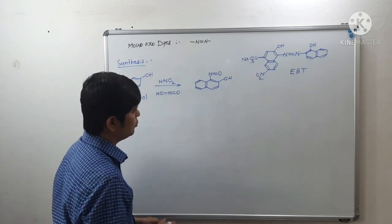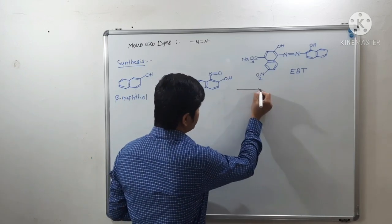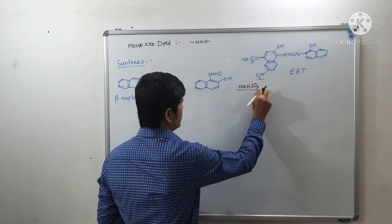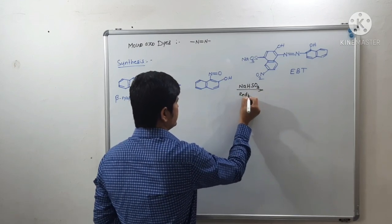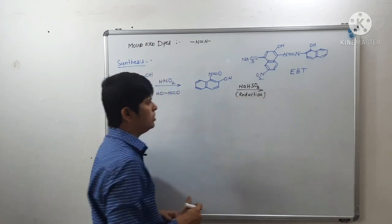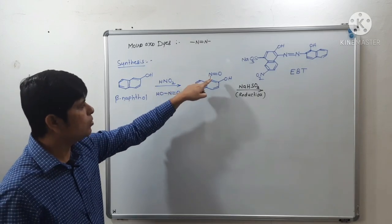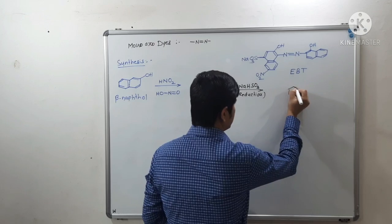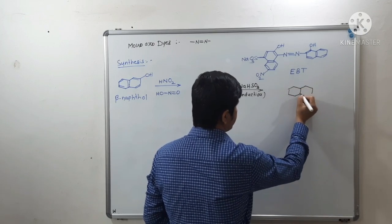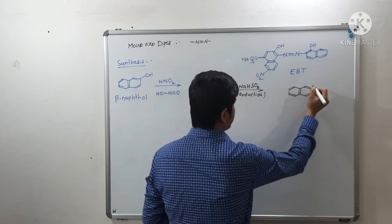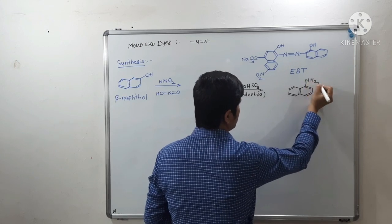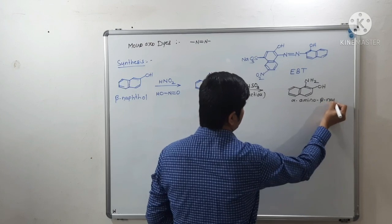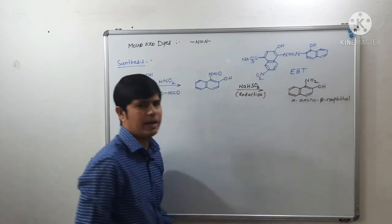In the next step, alpha-nitroso-beta-naphthol is reacted with NaHSO3 (sodium bisulfite) for reduction. The nitroso group (N=O) undergoes reduction to give alpha-amino-beta-naphthol.